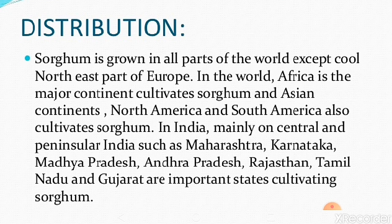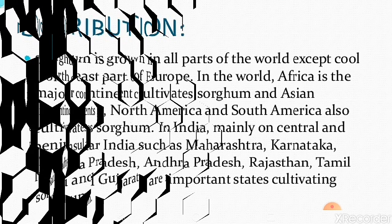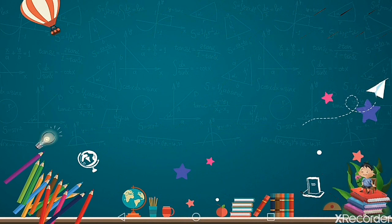Jowar, also known as sorghum, is mainly grown in Central and Peninsular India. Important states cultivating sorghum include Maharashtra, Karnataka, Madhya Pradesh, Andhra Pradesh, Rajasthan, Tamil Nadu, and Gujarat.